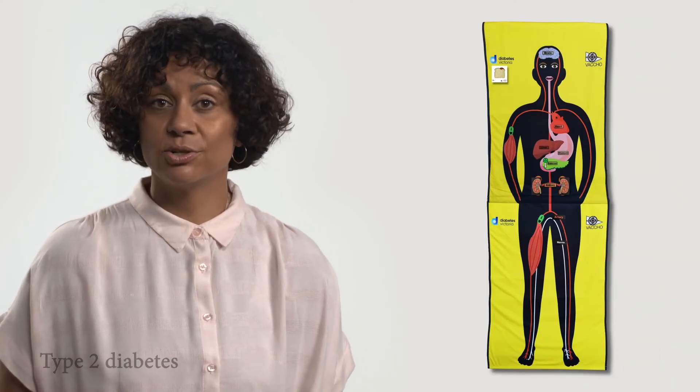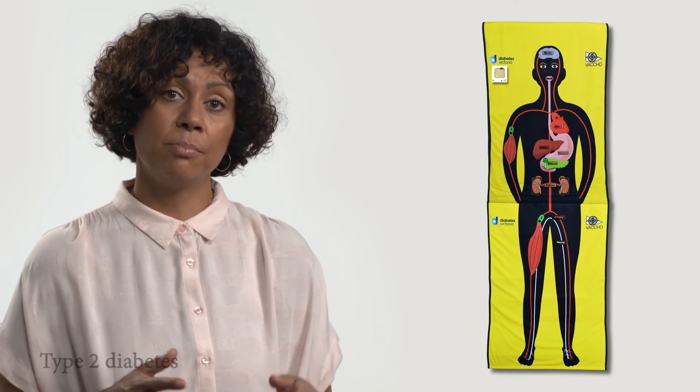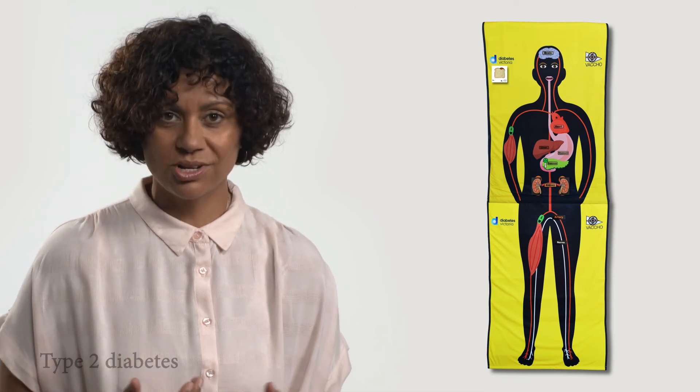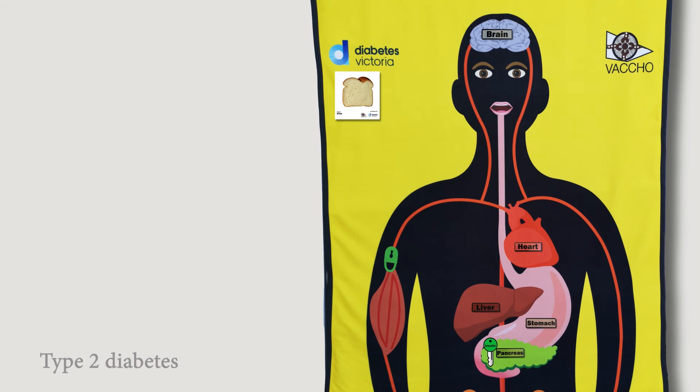Now let's look at what happens to glucose in the body of a person with type 2 diabetes. In type 2 diabetes the carbohydrate food is eaten and broken down into glucose just the same as in a person without diabetes. The glucose is absorbed into the bloodstream and travels around the body in the same way too.